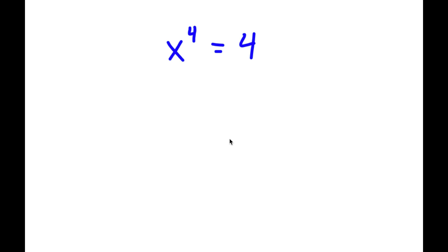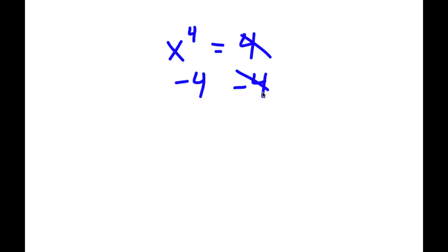In this problem, I have x to the power of 4 is equal to 4. To solve this, I'm going to first start by subtracting 4 on both sides. These two cancel out and I get x to the power of 4 minus 4 is equal to 0.